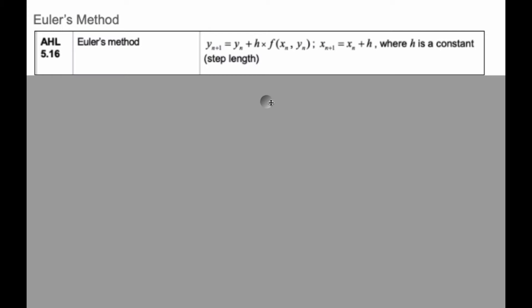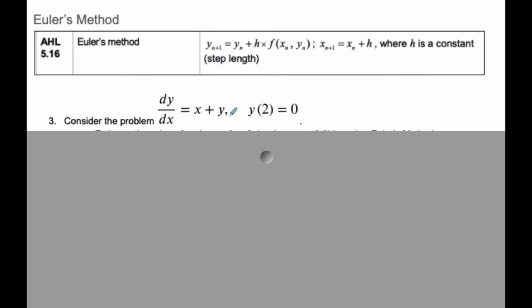Euler's method uses the formula in the formula booklet. It takes a differential equation with an initial value and asks us to find what the y value will be when x equals 3, when we're only given the derivative.